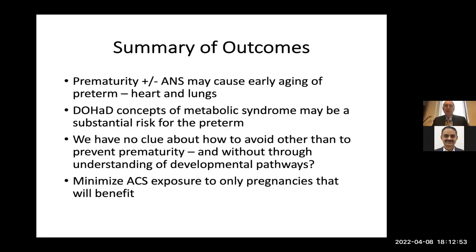Summary of outcomes: antenatal steroids may cause early aging of the heart and lungs. The DOHAD concept about metabolic syndrome may be a substantial risk for all preterms, who seem to have an increased risk of metabolic syndrome in early life, predicting heart disease, cancer, and other bad outcomes. Unfortunately, we have no clue how to avoid this other than preventing prematurity, and without understanding the developmental pathways, we can't develop therapies to minimize it.